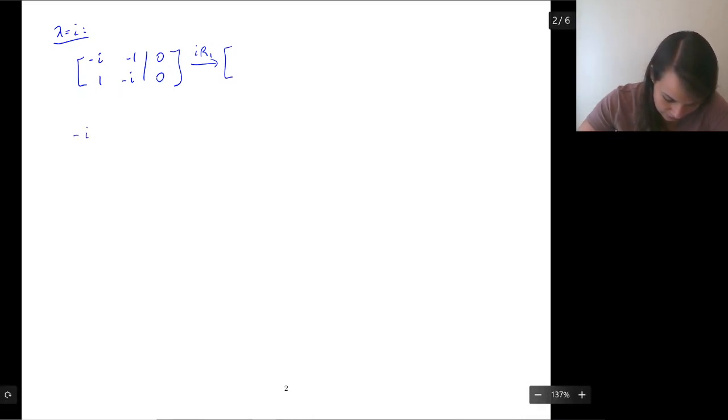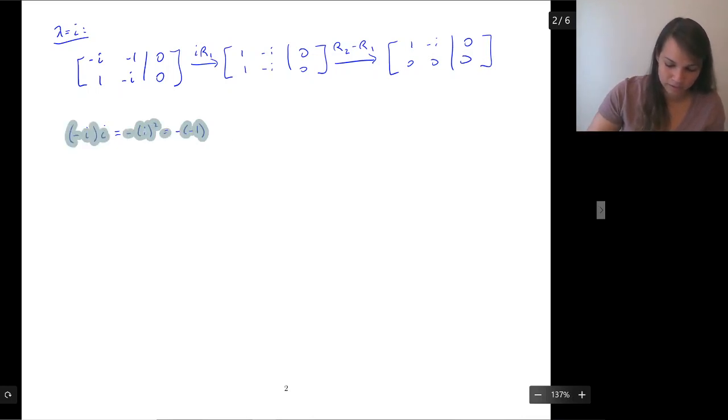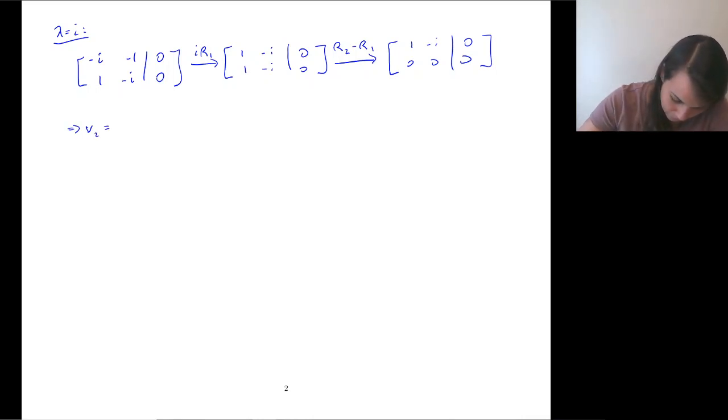Okay, so λ equals, we'll do the positive i case first. So if we plug this in, we have -i, -1, 1, -i. Here's our augmented matrix. We're ready to solve. Yeah, trying to combine these is not pretty. So let's take this slow. We're just going to multiply row 1 by i. So then, -i times i is going to be -i², which is, so remember, i² is negative 1, so negative negative 1. So that's going to be a positive 1 up there, and then a -i, 1, -i.